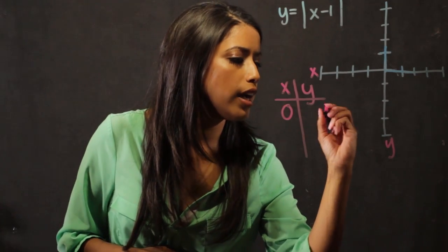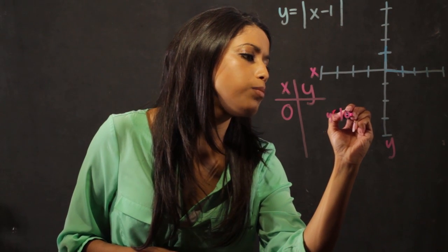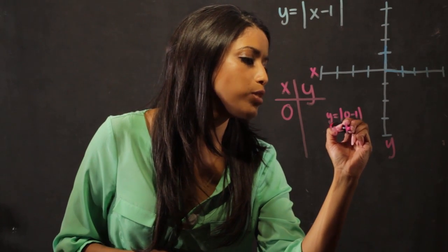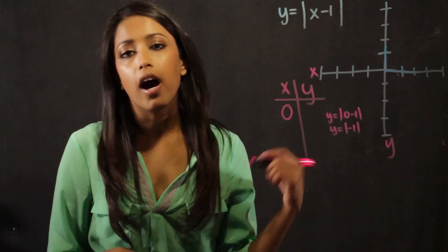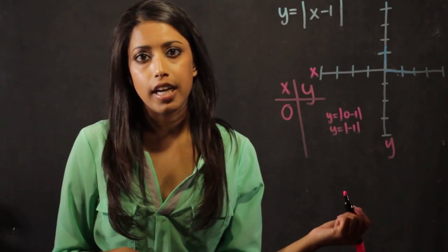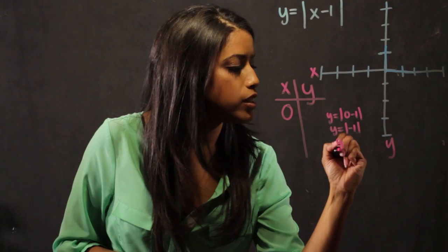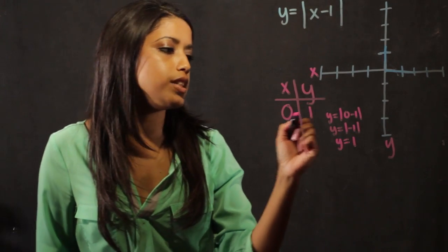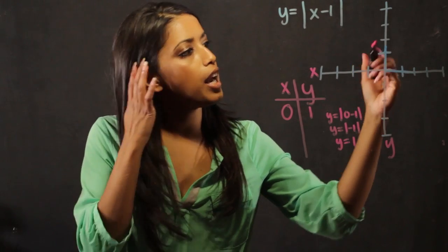So y equals the absolute value of 0 minus 1, which is the absolute value of minus 1. Remember that the absolute value is the positive number that's inside the absolute value sign, so negative 1 becomes positive 1. We know that one point on our graph is 0 comma 1, which is 0 on the x-axis and up 1 on the y.